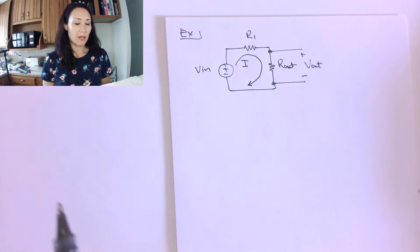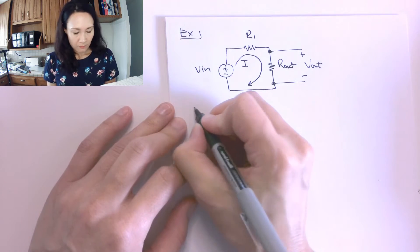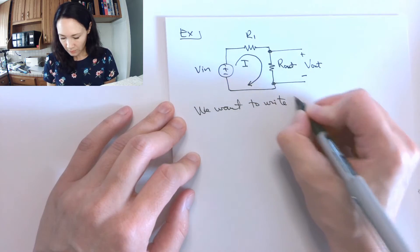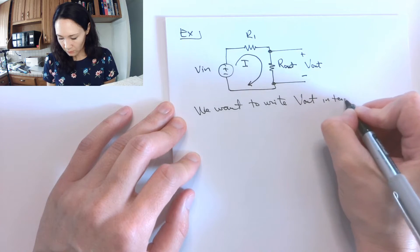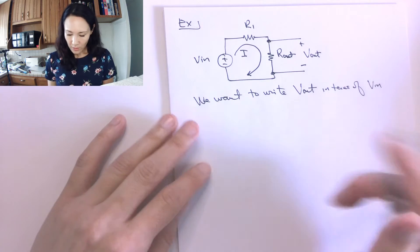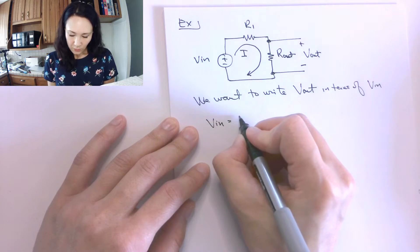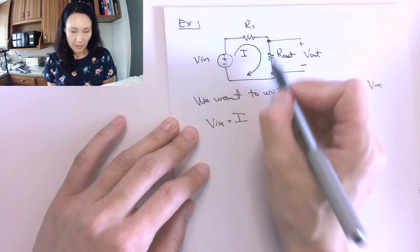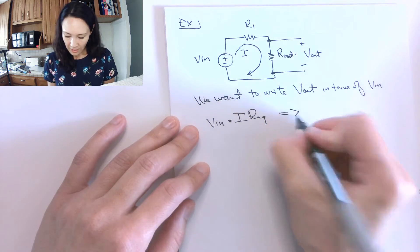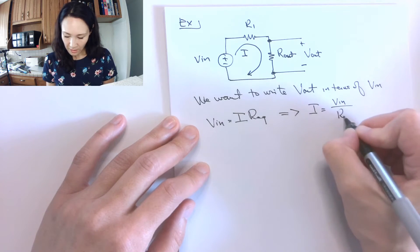So our goal here is we want to write an equation for v out in terms of v in. So what do we know? We know by Ohm's Law that v in is equal to the i that comes out of v in times r equivalent. So this implies that this current coming around here is going to be v in divided by r equivalent.